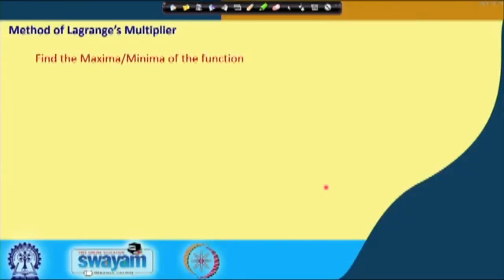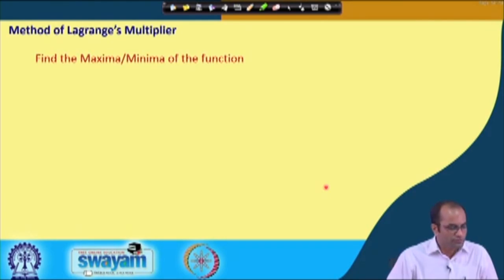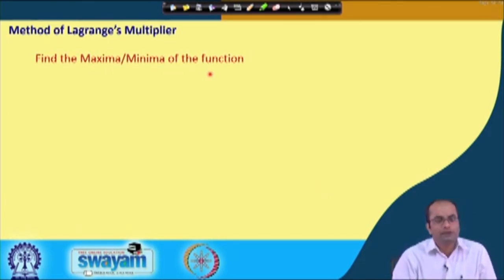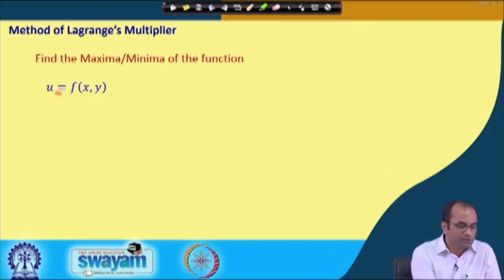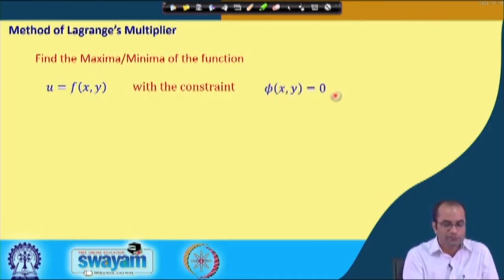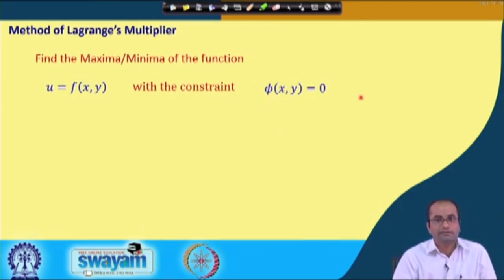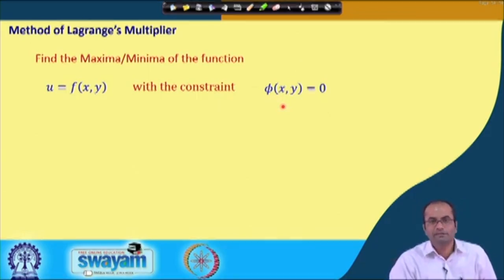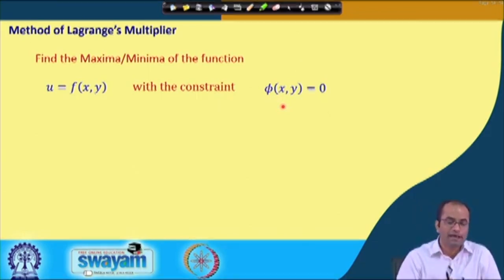What is the method of Lagrange multiplier? Let me discuss the problem. If you want to find the maxima and minima of the function u = f(x, y), where we have some other constraint that φ(x, y) = 0, we have some relation, some conditions on x and y. This is similar to the problem discussed in the previous lecture where we had taken the boundaries into consideration.